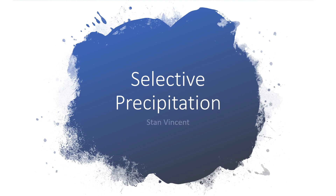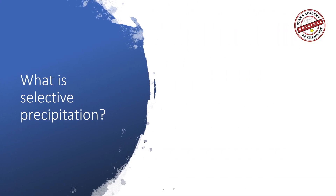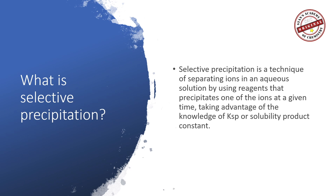Selective precipitation is a technique of separating ions in an aqueous solution by using reagents that precipitate one of the ions at a given time, taking advantage of the knowledge of solubility product, or KSP values.